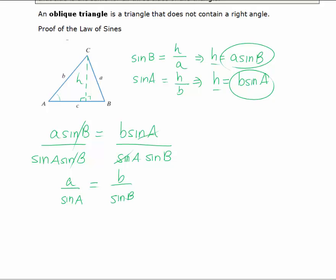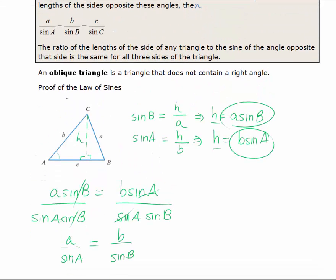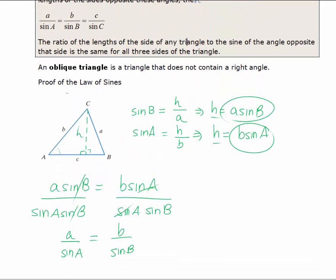This is the proof of the first portion of the law of sines. We could do the same thing by drawing a perpendicular from angle A to side a, and we'd be able to add in the fact that this is also equal to c over sine C. It's a fairly simple definition to use to help you solve triangles that are not right triangles.